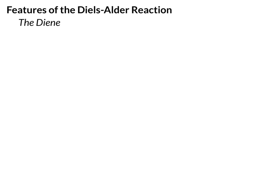Next, let's take a look at some features of the diene component of the reaction. We learned that electron withdrawing groups on the dienophile increase the rate. The opposite is true for the diene — on the diene, electron donating groups accelerate the reaction.